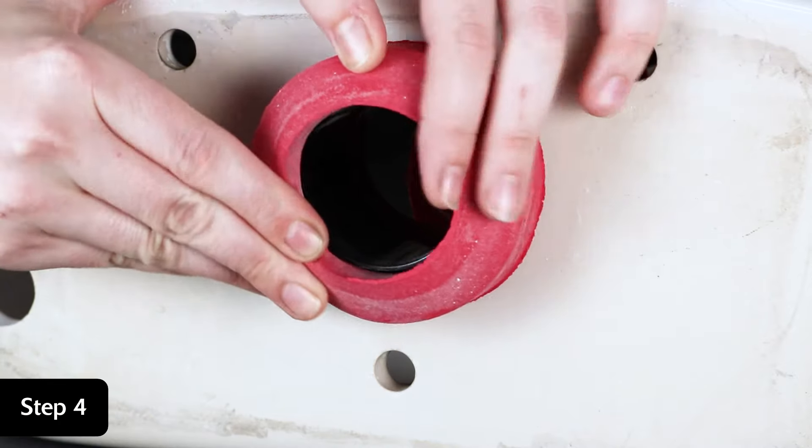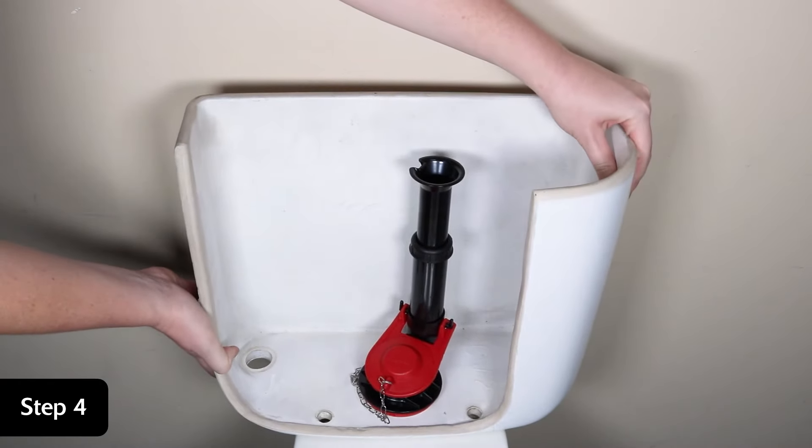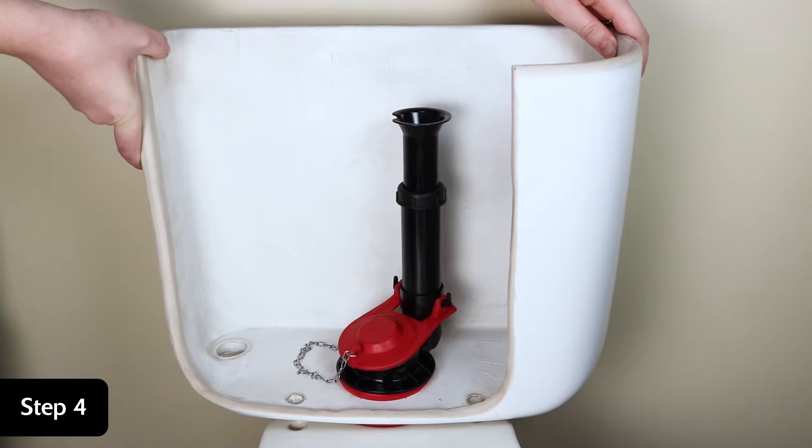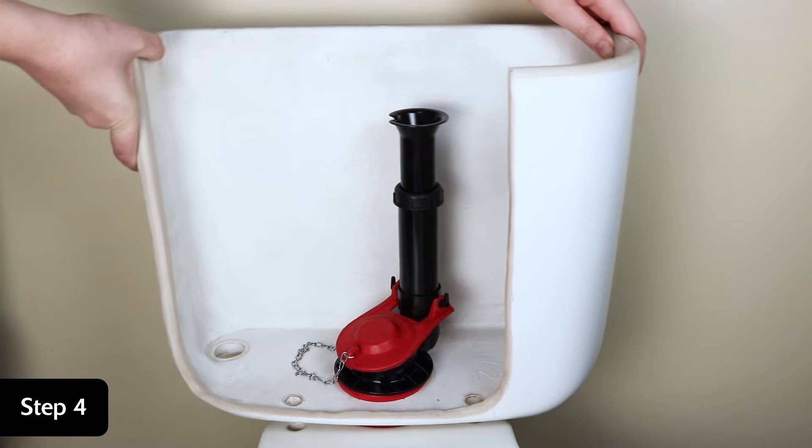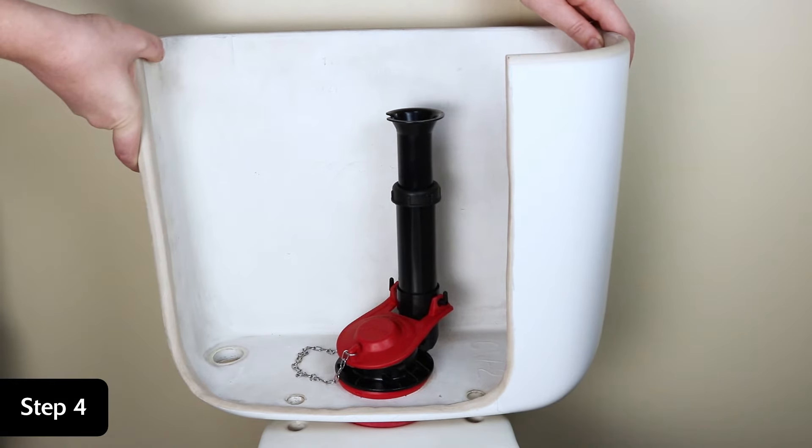Place the new gasket over the mounting nut threads. Carefully set the tank onto the bowl. The new gasket may be thicker than your old one, causing the tank to sit higher and wobble. This is normal. The gasket is designed to compress.